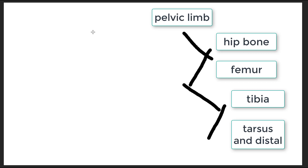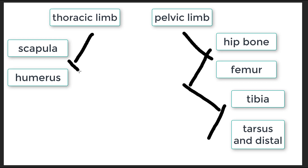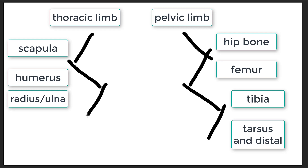We're also going to include the thoracic limb, because comparing the two limbs makes more sense when you think about how they relate to one another. So let's redraw the thoracic limb with the scapula, humerus, radius and ulna, and then the carpus and digits. Now we're going to consider both the thoracic and pelvic limbs together.